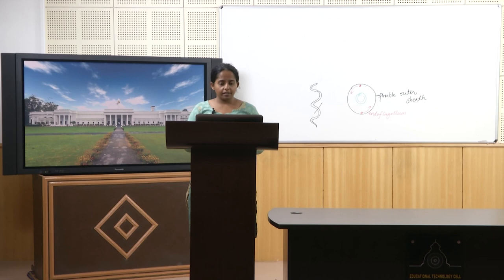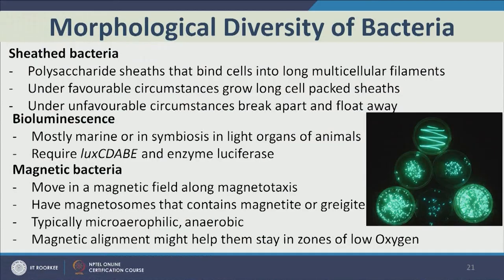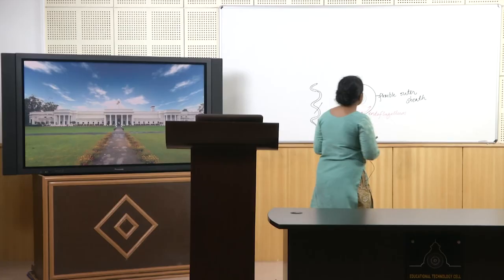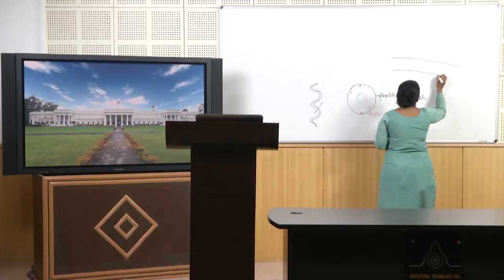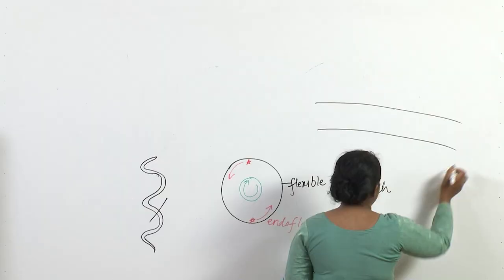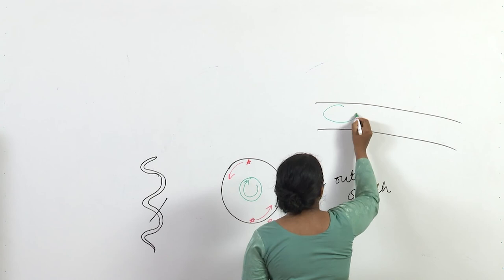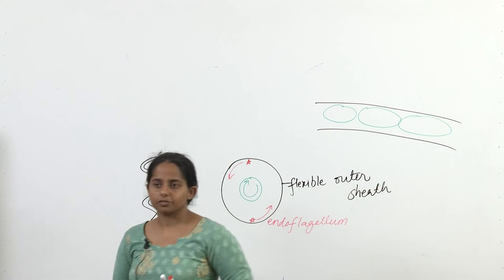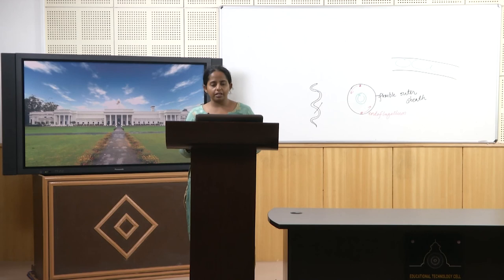In sheath bacteria, cells grow from one terminal end forming long multicellular filaments with one outer sheath. Under a microscope you see one long cylinder but inside the sheath there are multiple cells. Under favorable circumstances they grow long cell-packed sheaths; under unfavorable circumstances they break away and disperse to find more suitable environment.